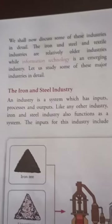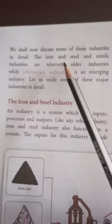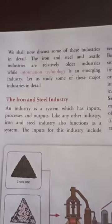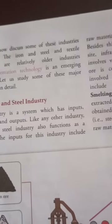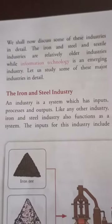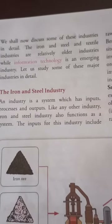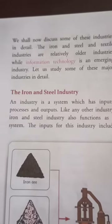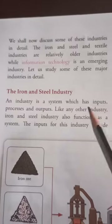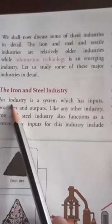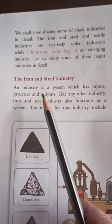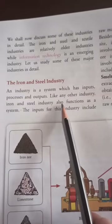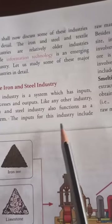Turn to page number 62. We shall now discuss some of these industries in detail. The iron and steel and textile industries are relatively older industries, while information technology is an emerging industry — one that is still rising and advancing. Like any other industry, the iron and steel industry also functions as a system with inputs, processes, and outputs.